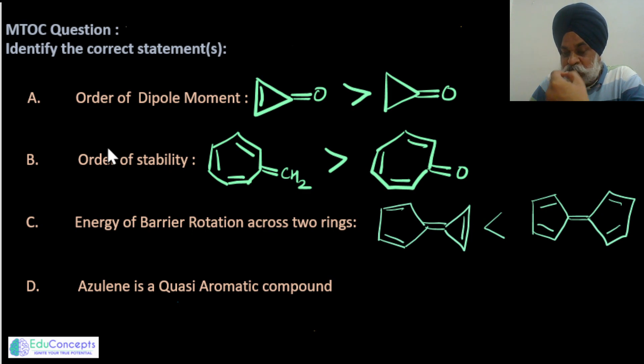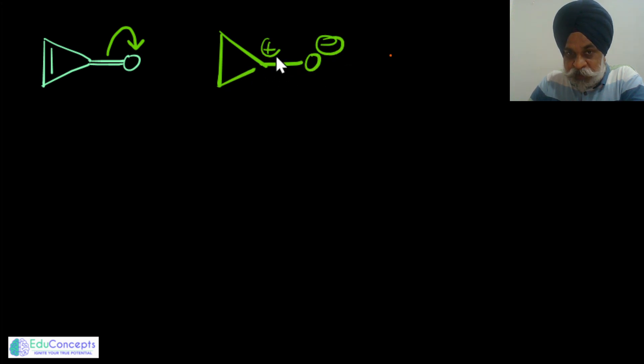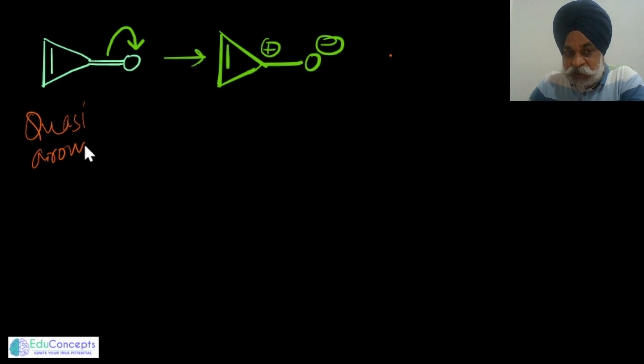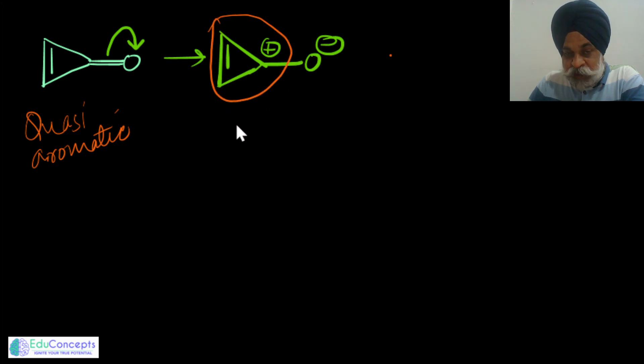Coming to the first compound in the question — if I do the polarization of one of the pi bonds, this part gets a negative charge, this gets a positive charge, and there is a remaining pi bond. As stated in the definition, on polarization of any pi bond, if the system allows a species to attain aromatic character, it can be said as quasi-aromatic. This species is quasi-aromatic.